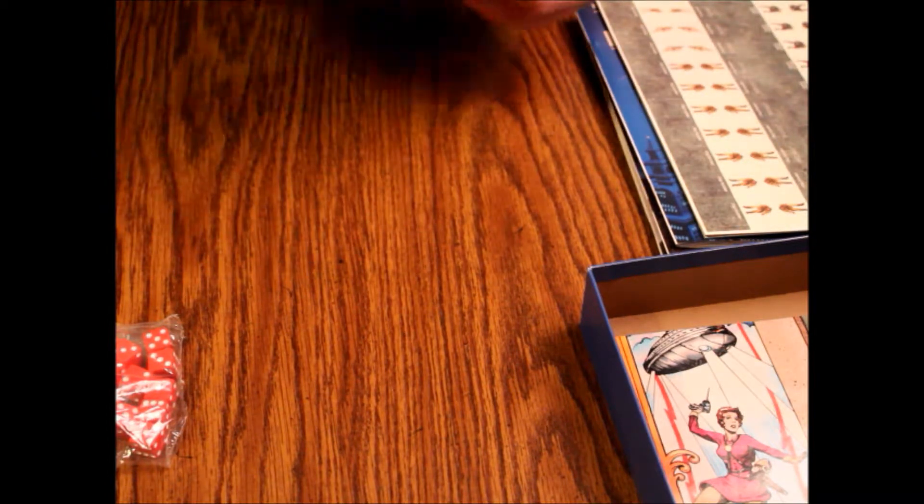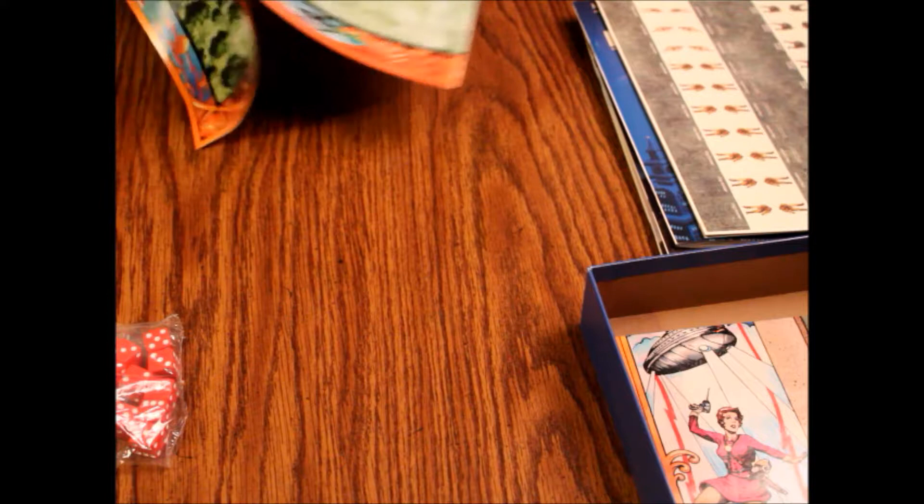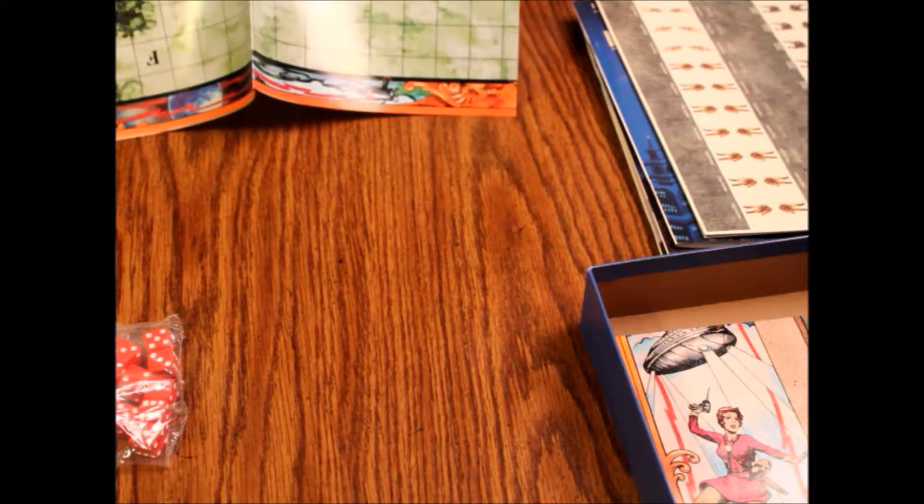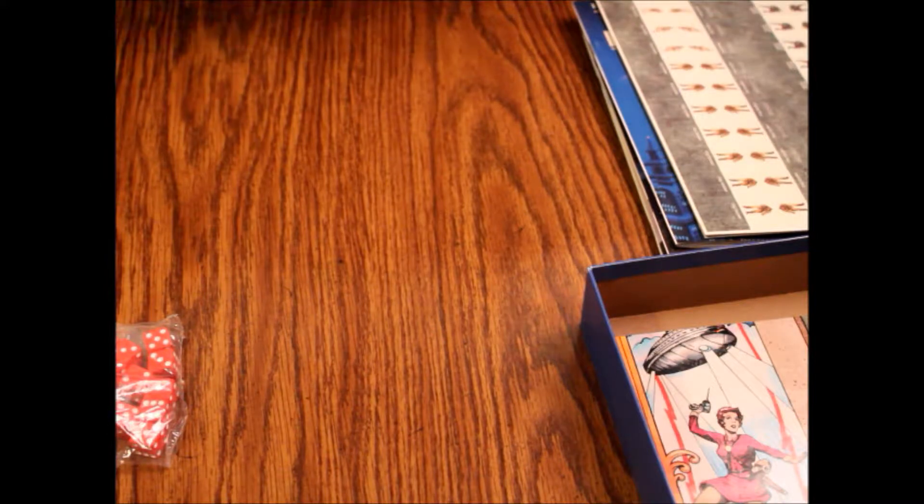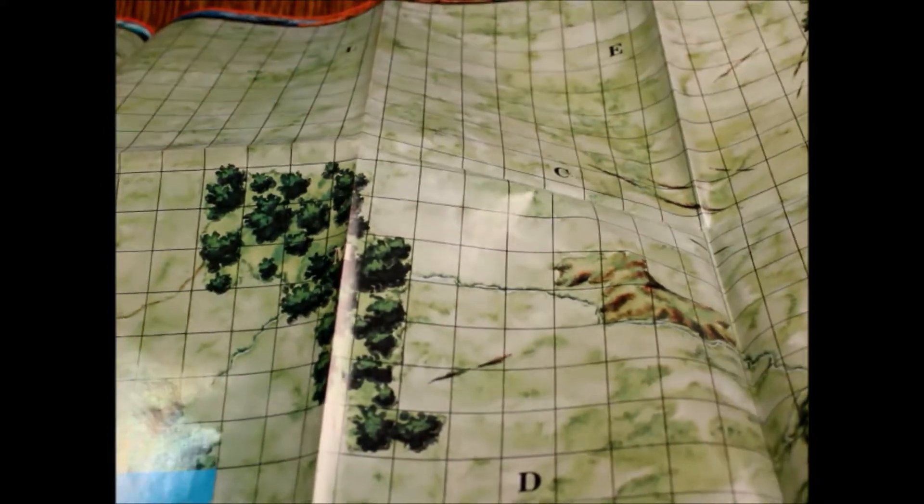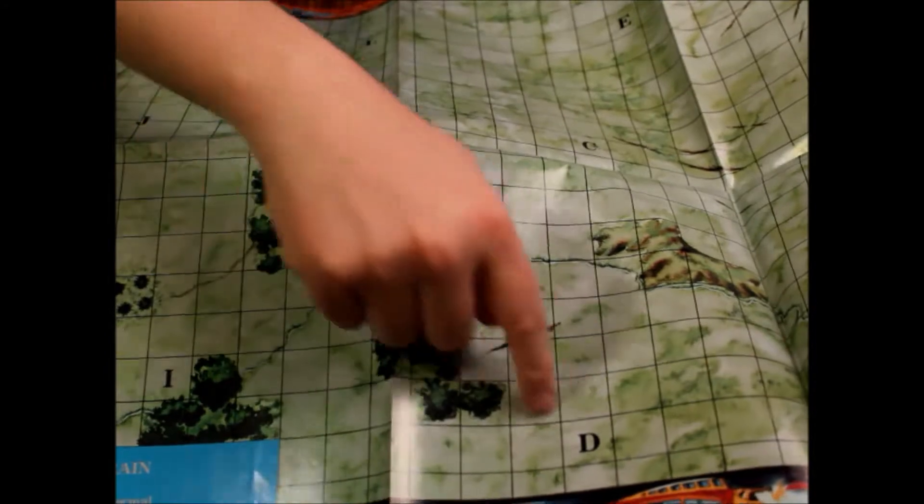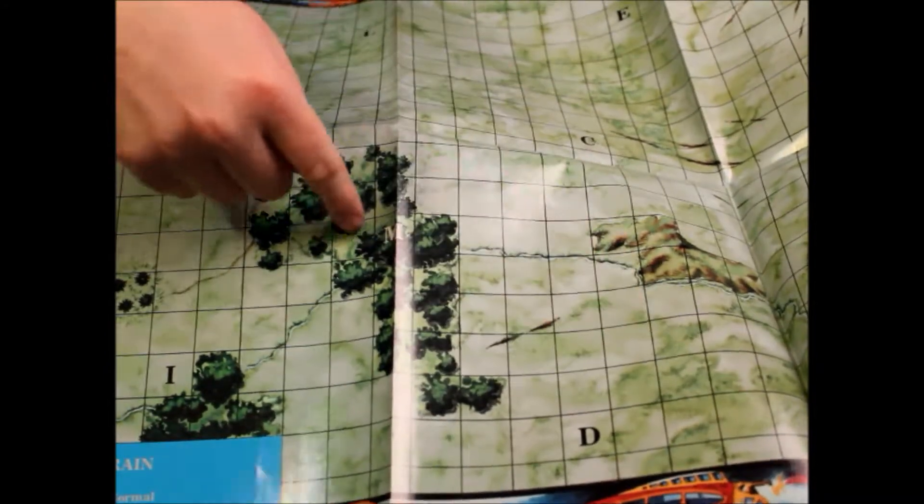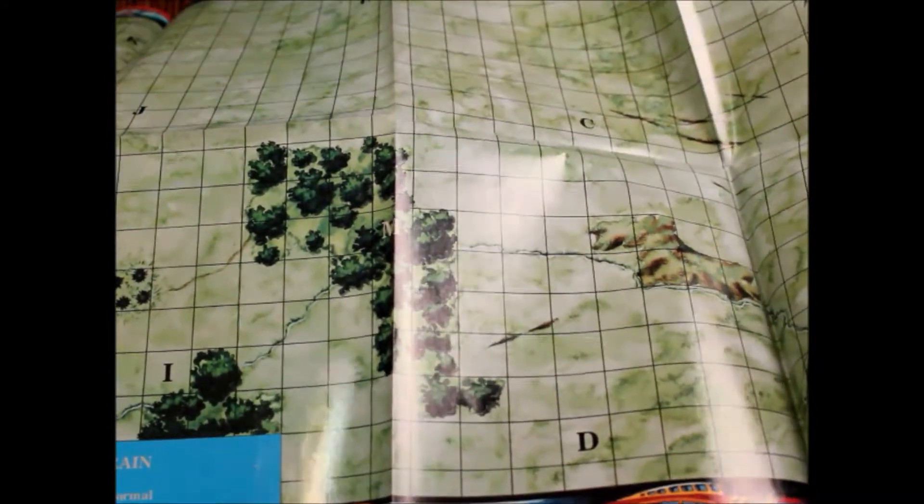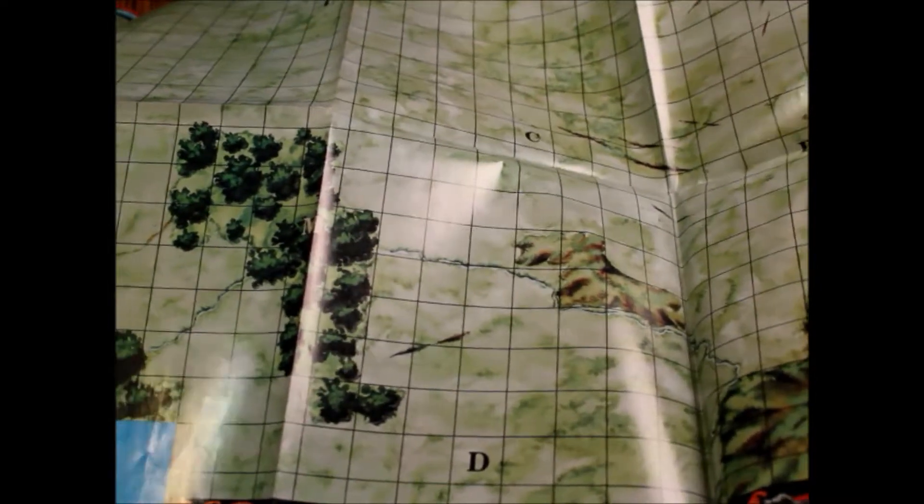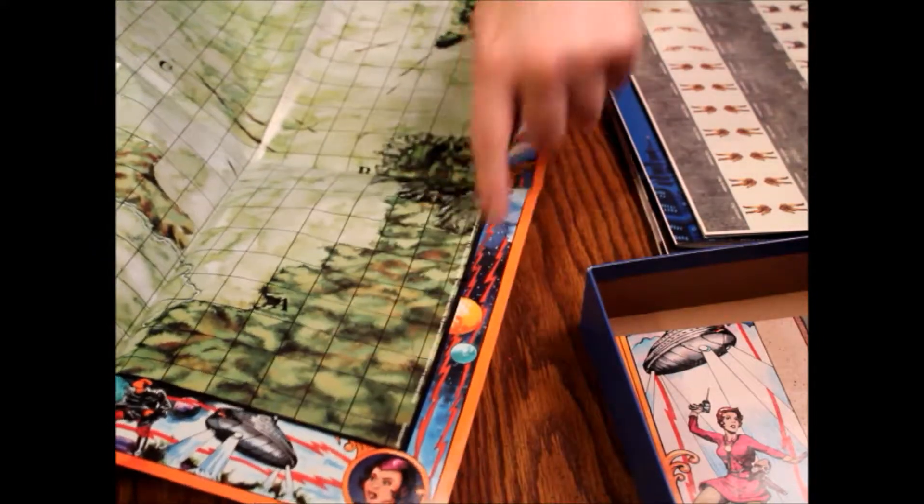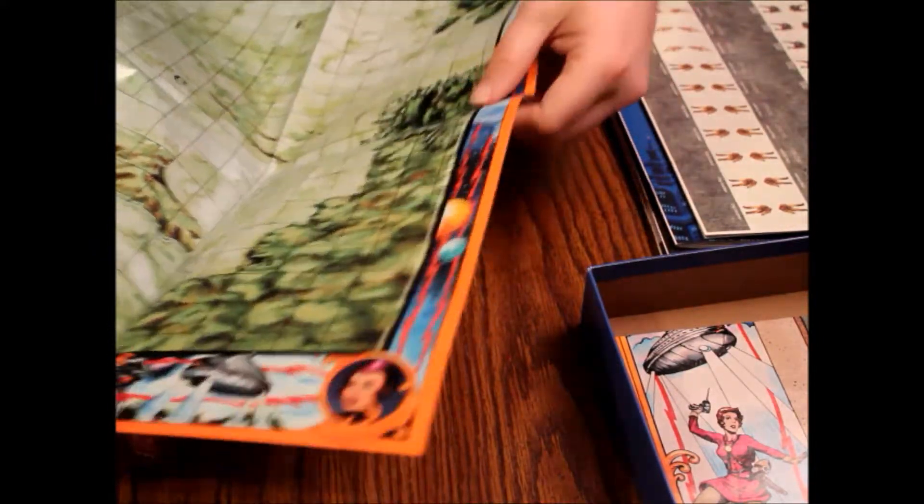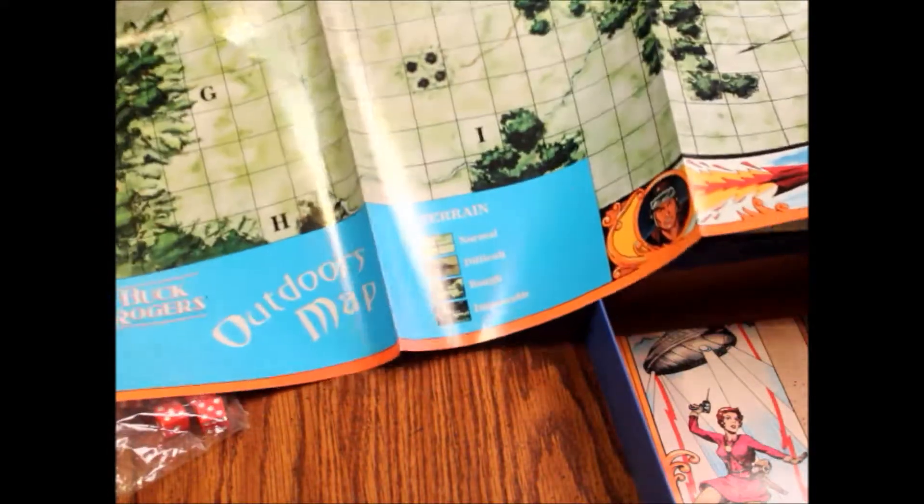The other map is the outdoor map. It's got different terrain: normal, difficult, rough, and impassable. This is just a generic outdoorsy scene with different sections listed—there's D, M, C, E. It's not in any real good order, quite honestly. It does have kind of that art style along the trim, like you saw on the other one, which I dig, but a lot of people aren't into the retro stuff like I am.